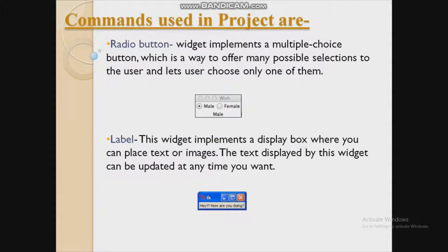Here are the commands that we have used. The radio button is used to implement a multiple choice button, which is a way to offer many possible selections to the user and lets the user choose only one of them. As you can see in the image, there are two options, male and female, and a user has to select any one.